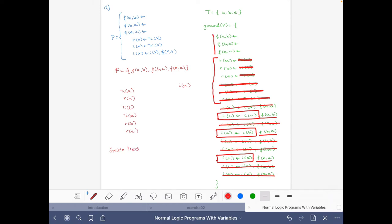We write it down here. Stable model: we have all those facts plus R(a), R(b), R(e).